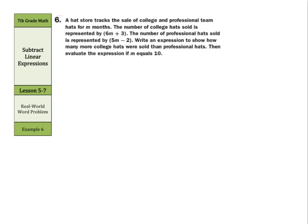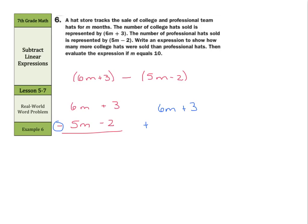And now, when we look at our real-world problem: a hat store tracks the sale of college and professional team hats for m months. The number of college hats sold is represented by 6m plus 3. The number of professional hats sold is represented by 5m minus 2. Write an expression to show how many more college hats were sold than professional hats. Well, we need to use subtraction here. We'll set this up as 6m plus 3 minus 5m minus 2. Change the subtraction into addition: 6m plus 3 plus the opposite of 5m is negative 5m, and the opposite of minus 2 is plus 2. So 3 plus 2 is 5, and 6m plus negative 5m is m. So our expression is m plus 5.